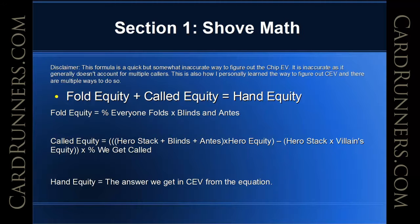Called equity gets a little bit more complex. The very first section of it, we need to figure out what we can gain, which is our stack plus the blinds and antes. Then we have to figure out how much we actually gain long run, so we multiply it by our equity versus the range that calls us. The second section, we figure out what we can lose, which is our stack times villain's equity — how their range does against our hand — and then we do that subtraction.